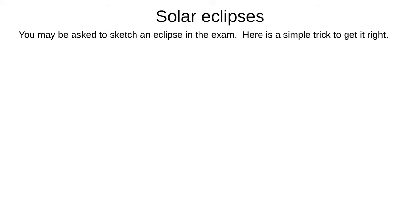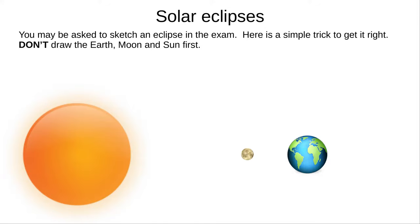You may be asked to sketch an eclipse diagram in the exam. It's easy to get right if you know a simple trick. It's tempting to draw the Earth, Moon and Sun first. If you do, you might find that the light rays don't line up properly. Here, the umbra doesn't reach the Earth.